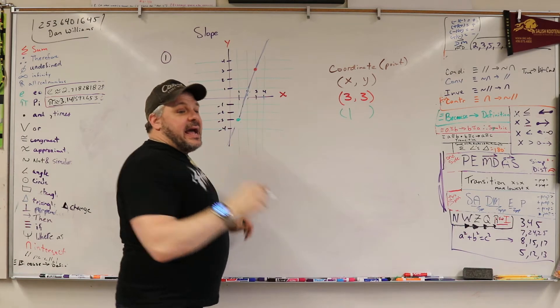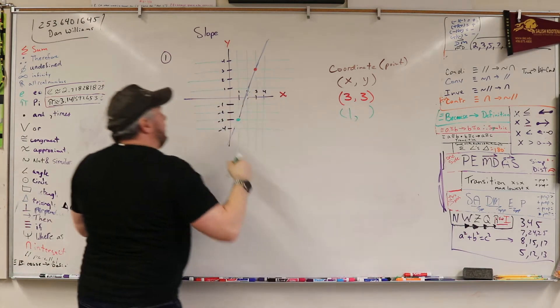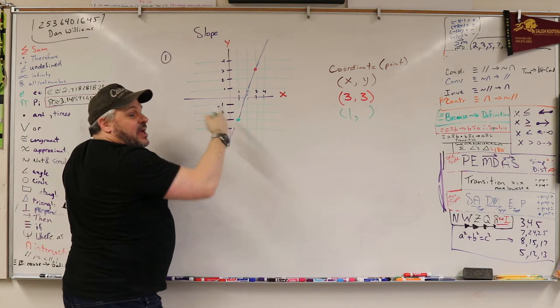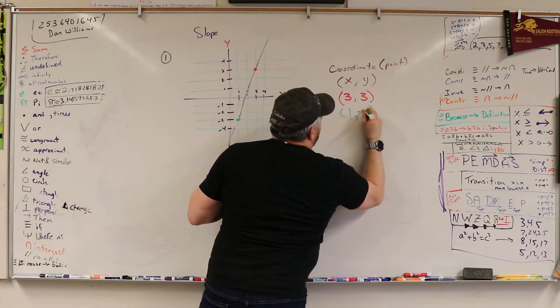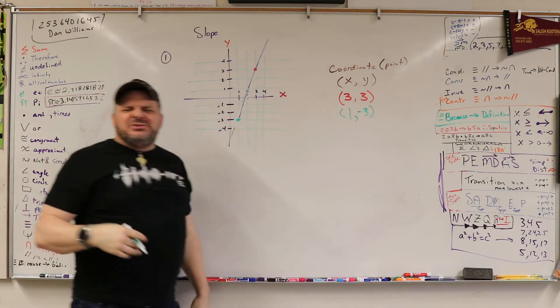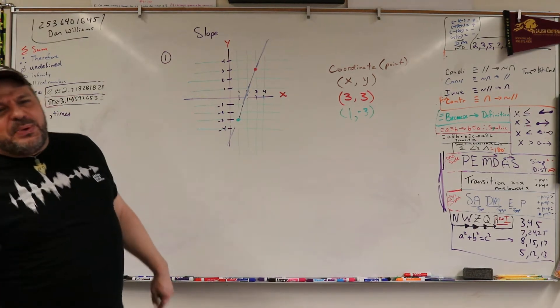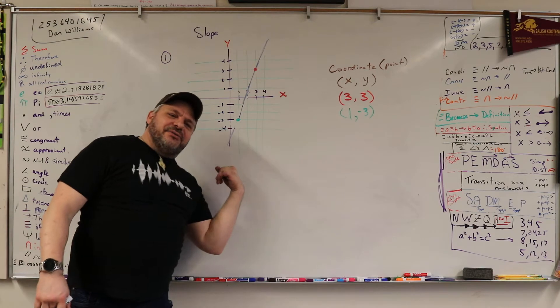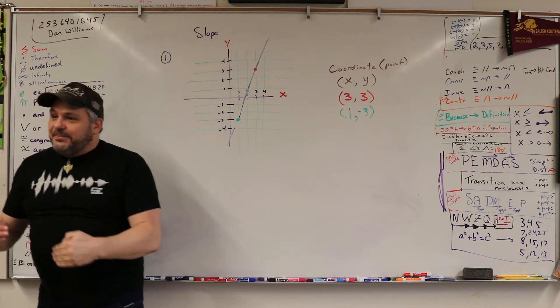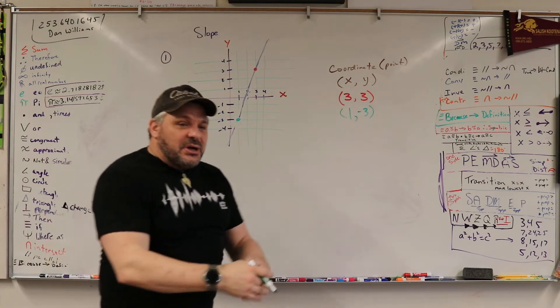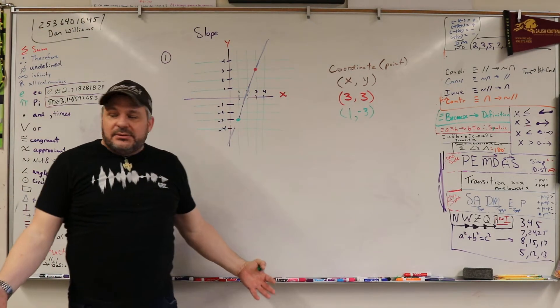And negative 3. Yeah, and the Y value, thank you, is going down 3. So it's negative. So it's negative. And this is huge, guys. I know this seems simple, right? Down is negative. Up is positive. Right is positive. Left is negative. That sounds simple. But I guarantee you, students struggle with this all the way to calculus.